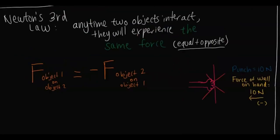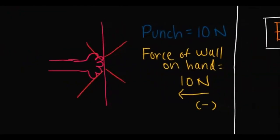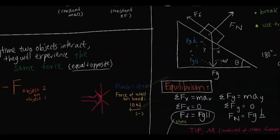Newton's third law states that any time two objects interact, they experience the same force, which is equal and opposite. The force experienced by one object on the other is the same magnitude, but opposite in direction. For example, if I punched a wall with 10 newtons of force, the force of the wall on my hand is also 10 newtons, acting back toward my hand — in the left direction. We define left as negative, which is why it's equal and opposite.